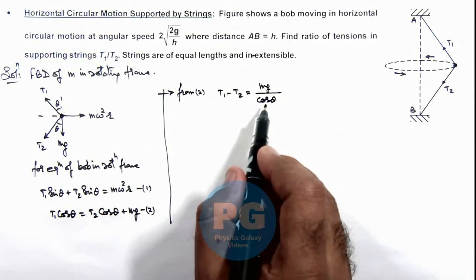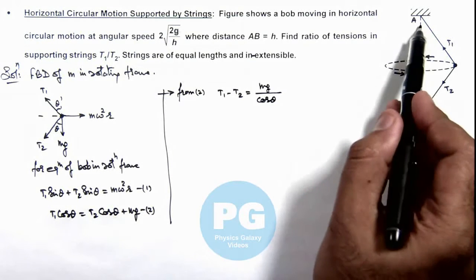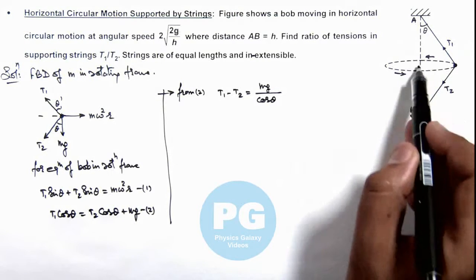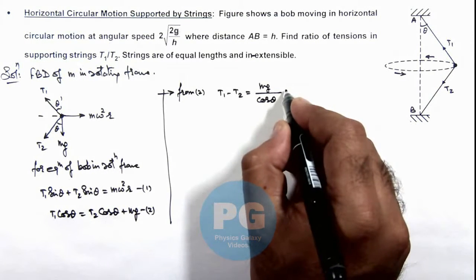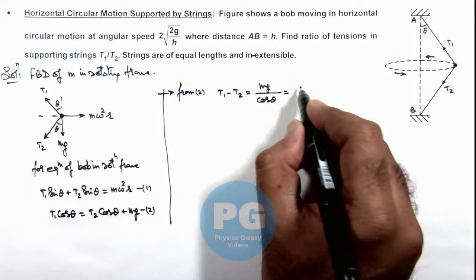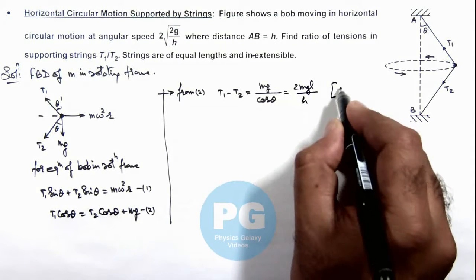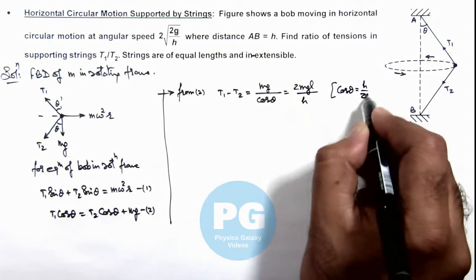Substituting the value of cosθ, as this angle is θ here, we can write cosθ = (h/2)/l. So this will be 2mgl/h, as we can write cosθ = h/(2l).